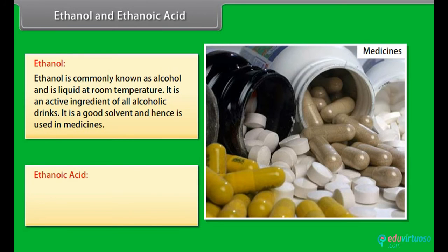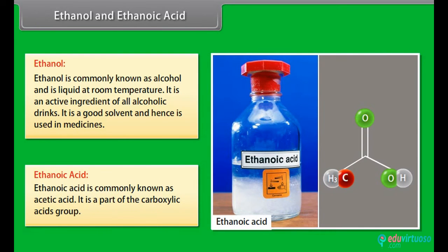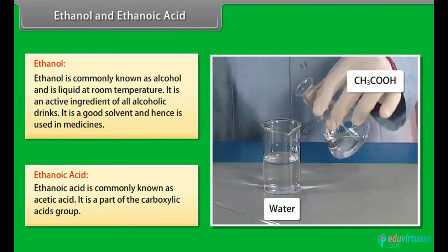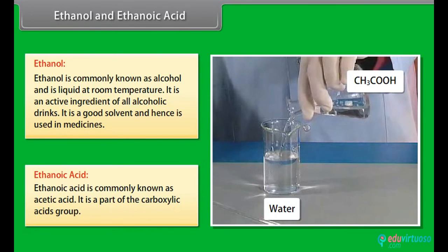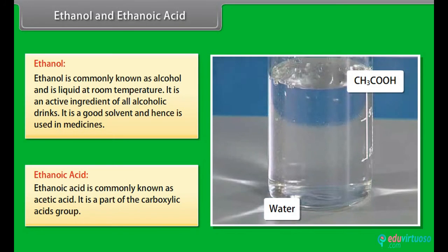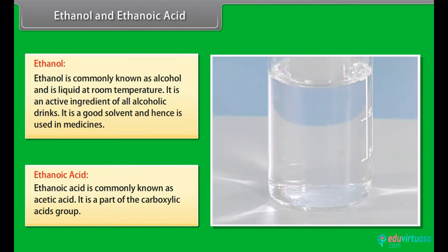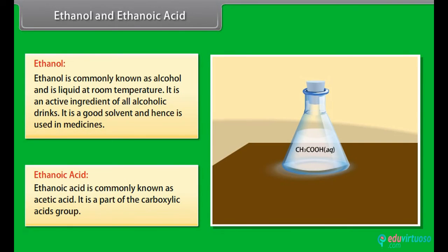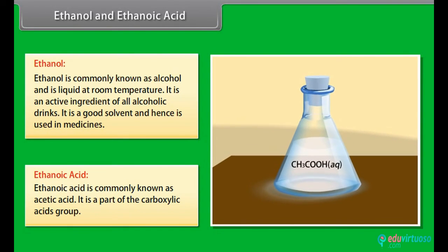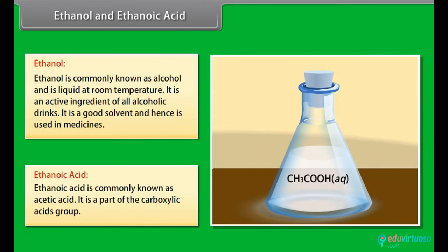Ethanoic acid. Ethanoic acid is commonly known as acetic acid. It is a part of the carboxylic acid group. When 5 to 8% solution of acetic acid is mixed in water, it forms a substance called vinegar. The melting point of pure ethanoic acid is 290 Kelvin. Because of this property, it freezes during winter and hence is also known as glacial acetic acid.